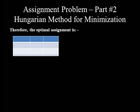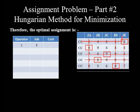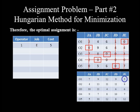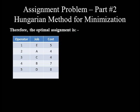For the optimal assignment, operator 1 is assigned to job E at a cost of 5; operator 2 is assigned to job A at a cost of 4; operator 3 is assigned to job C at a cost of 4; operator 4 is assigned to job B at a cost of 7; operator 5 is assigned to job D at a cost of 8. The total optimal cost is 5+4+4+7+8 = 28.